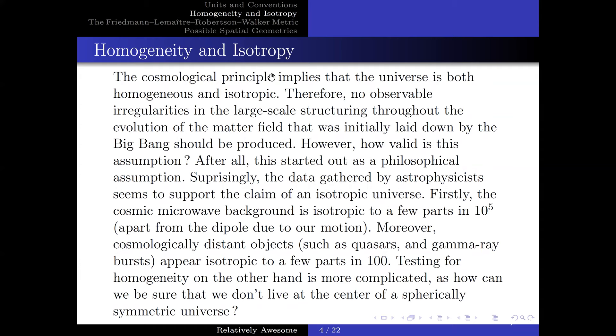Now, let us state the cosmological principle. The cosmological principle implies that the universe is both homogeneous and isotropic. Therefore, no observable irregularities in the large-scale structure throughout the evolution of the matter field that was initially laid down by the Big Bang should be produced. However, how valid is this assumption? After all, this started out as a philosophical assumption.